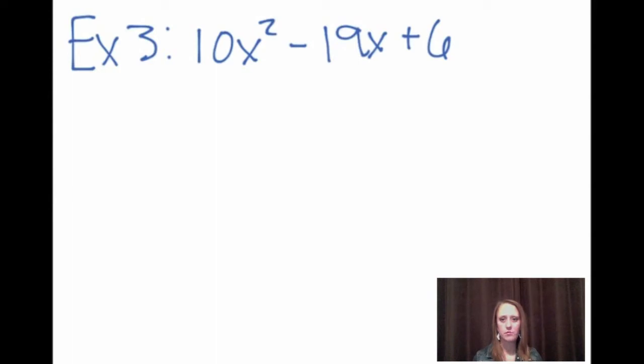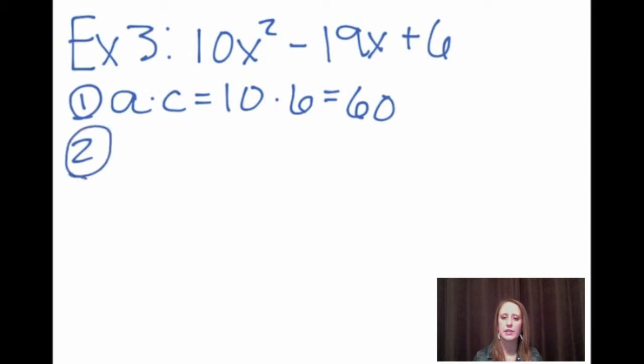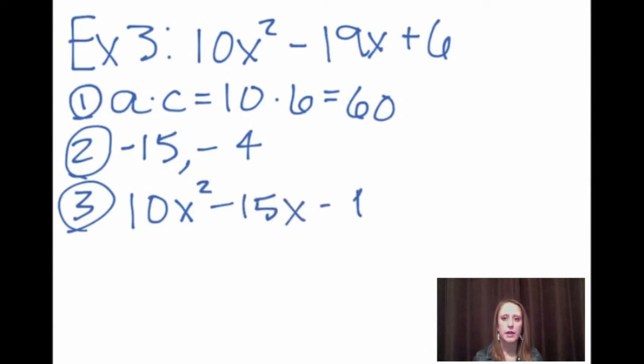And we will do one last example. Example three. We are going to factor 10x squared minus 19x plus 6. First step, just like we've been doing, is we take a times c. 10 times 6 gives us 60. Now we need to find two numbers that multiply to 60 and add up to negative 19. And those two numbers would be negative 15 and negative 4. Step three, we use those two numbers to rewrite the middle term. The expression then becomes 10x squared minus 15x minus 4x plus 6.